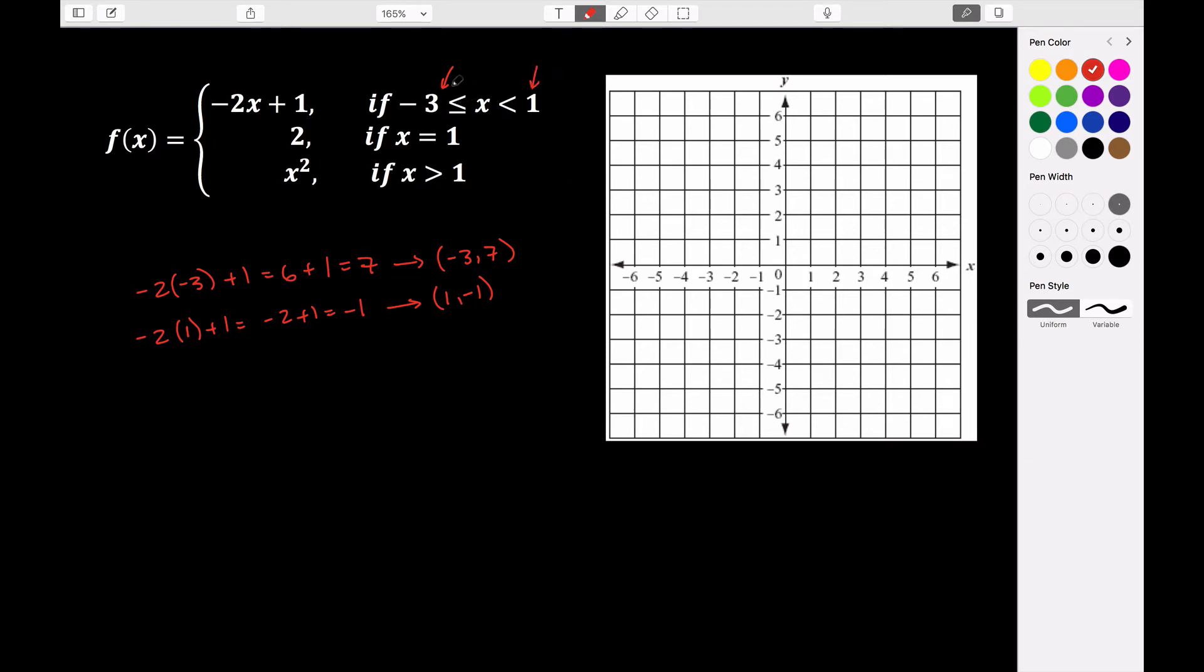Now, if we were to go and graph these, we can see that it's less than or equal to. So that means that at negative three, seven, it's going to be included in the graph. That point is going to be included in the graph, so it's going to be a closed circle. But here at one, it's not going to be included because it's strictly less than. So at one negative one, we have an open circle there.